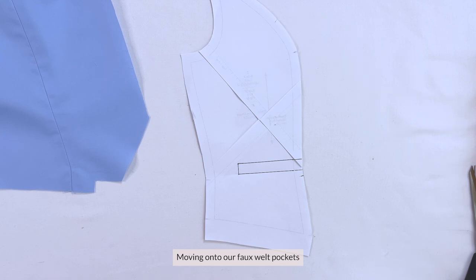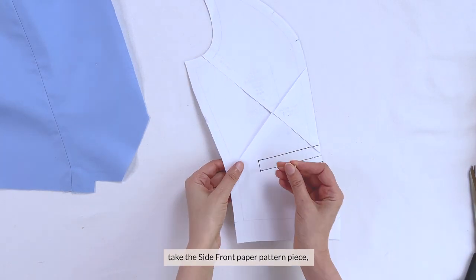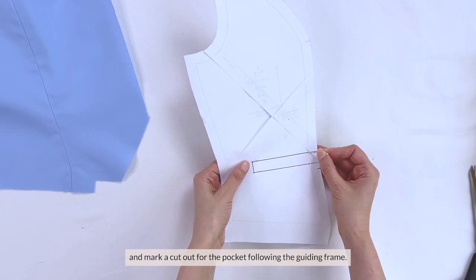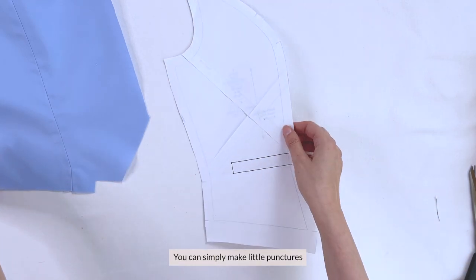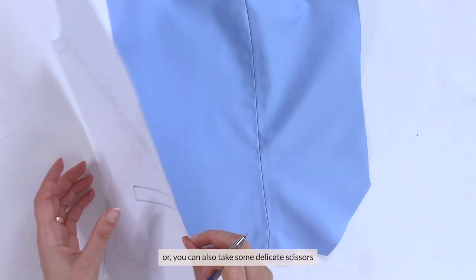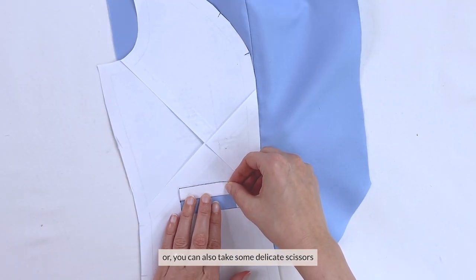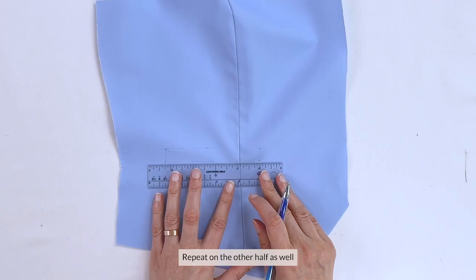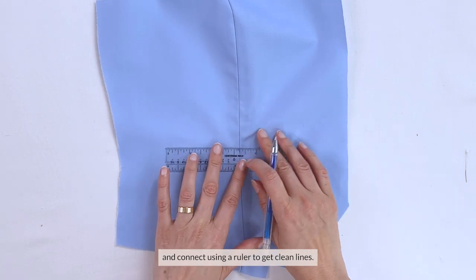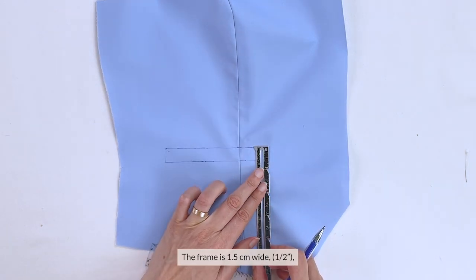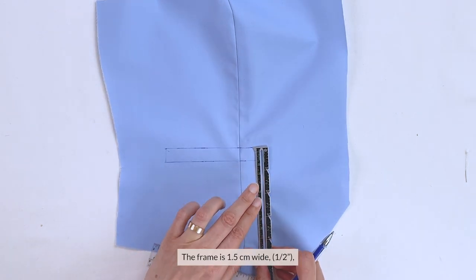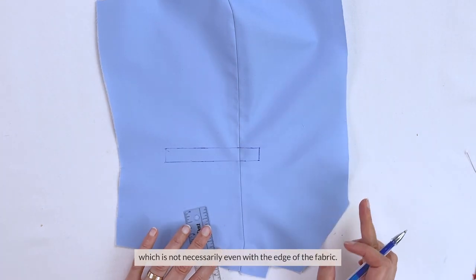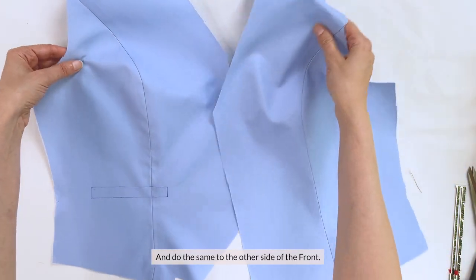Moving on to our faux weld pockets that we're going to add to this vest, take the side front paper pattern piece, and mark a cutout for the pocket following the guiding frame. You can simply make little punctures and mark through them at the corners, or you can also take some delicate scissors and cut out the frame guides, which you can lay it down on the fabric, and trace it out like this. Repeat on the other half as well, and connect using a ruler to get clean lines. The frame is 1.5cm wide, or ½ inch, so you want to keep a right angle with the frame, which is not necessarily even with the edge of the fabric.